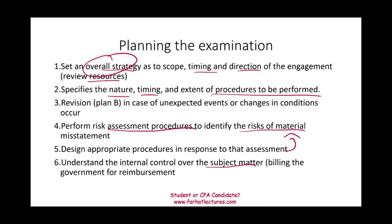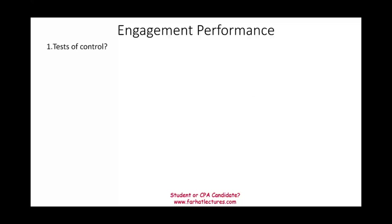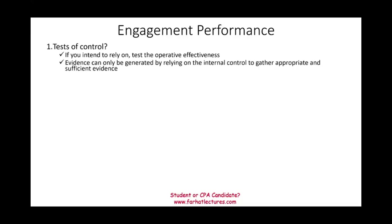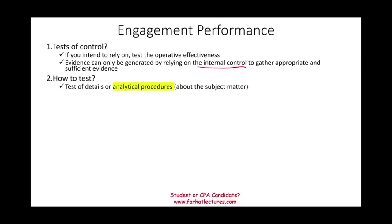Understand the internal control over the subject matter — for example, billing controls for government reimbursement. All the planning is done for a specific subject matter, not the overall audit. During engagement performance, you may need to test controls if you want to rely on them — testing their design and operating effectiveness. You could use tests of details or analytical procedures. If we're looking at a billing department: who authorizes billing, what's the paperwork, is there a password on the computer system? You're dealing with a specific subject matter, but the concepts are the same.